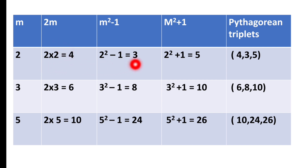Note that for m = 2, 2m is greater than m²−1. But in all other Pythagorean triplets generated this way, 2m is always the smallest, m²−1 is the middle value, and m²+1 is the biggest number.